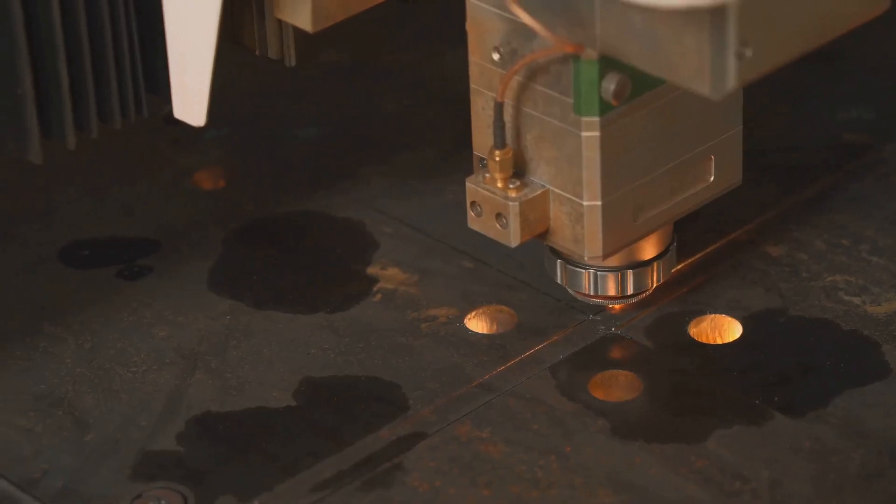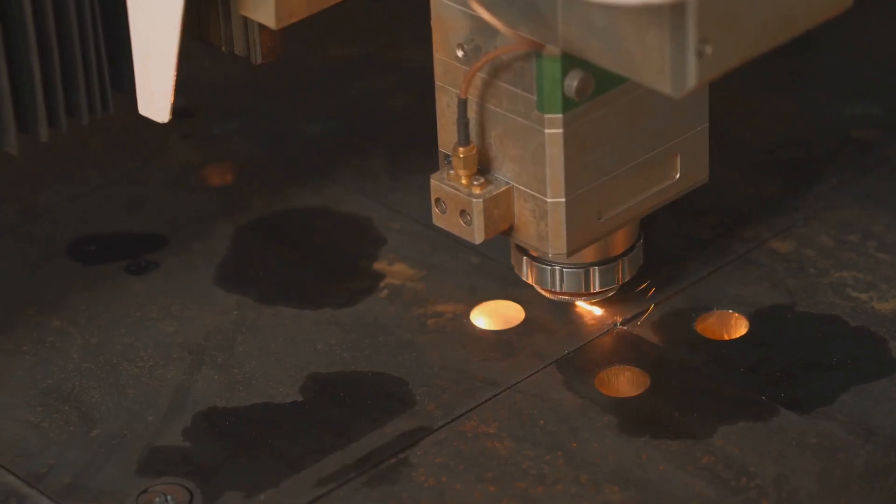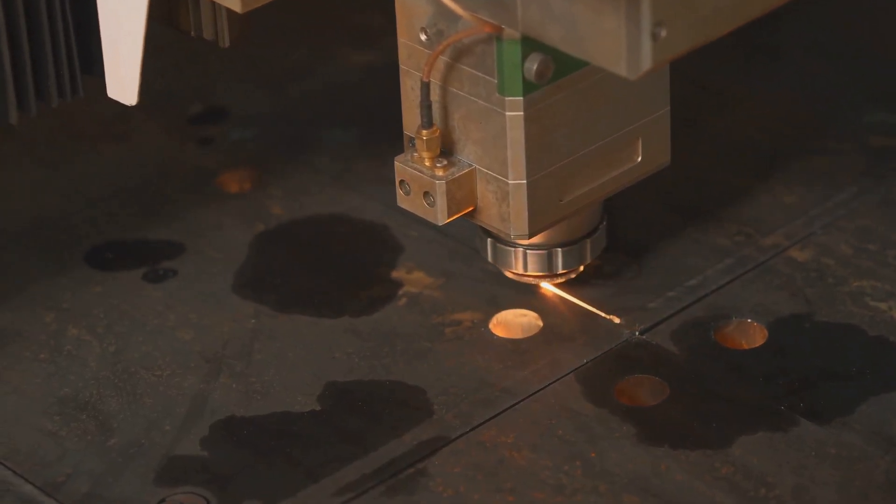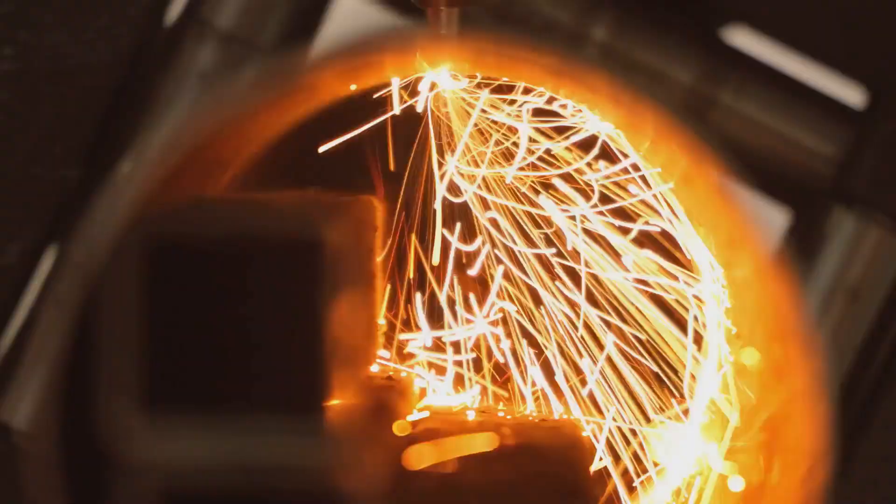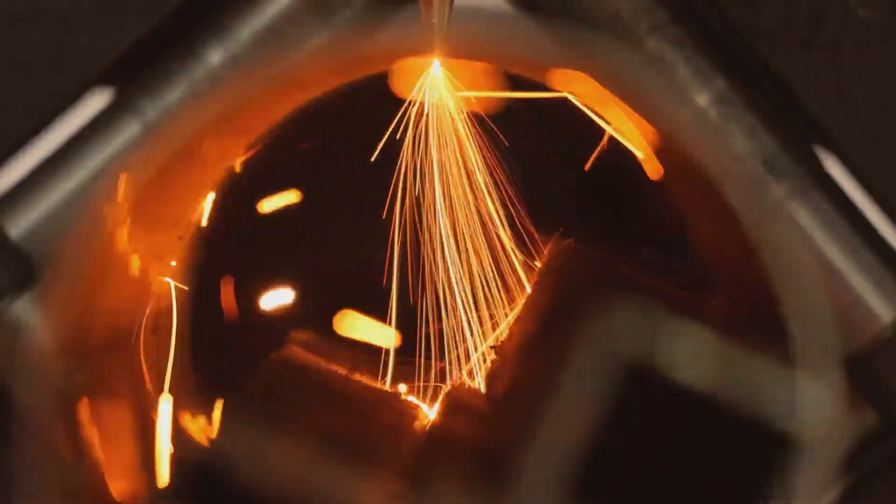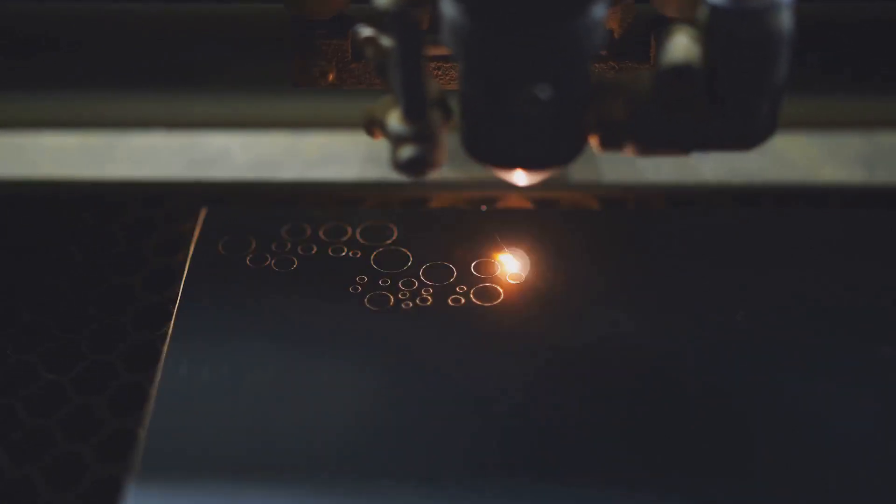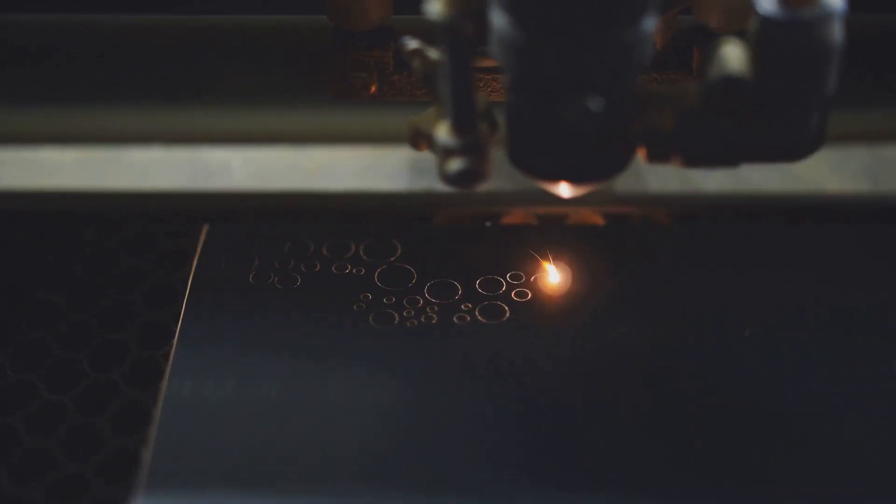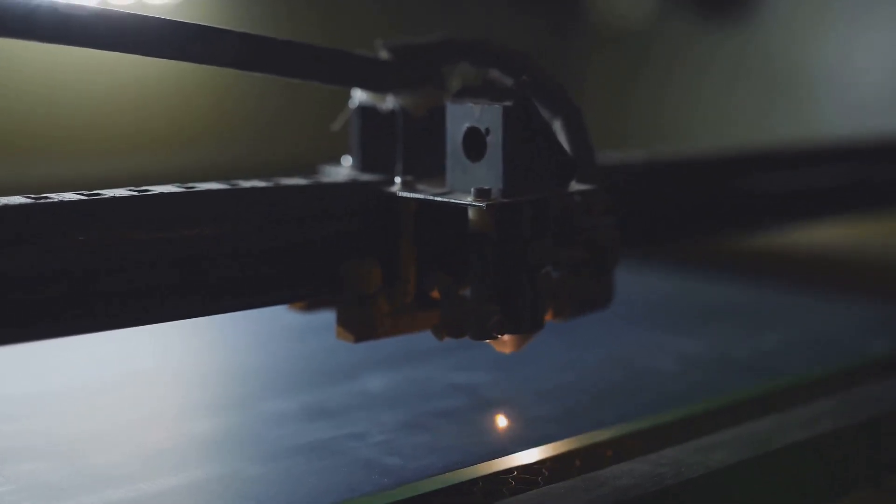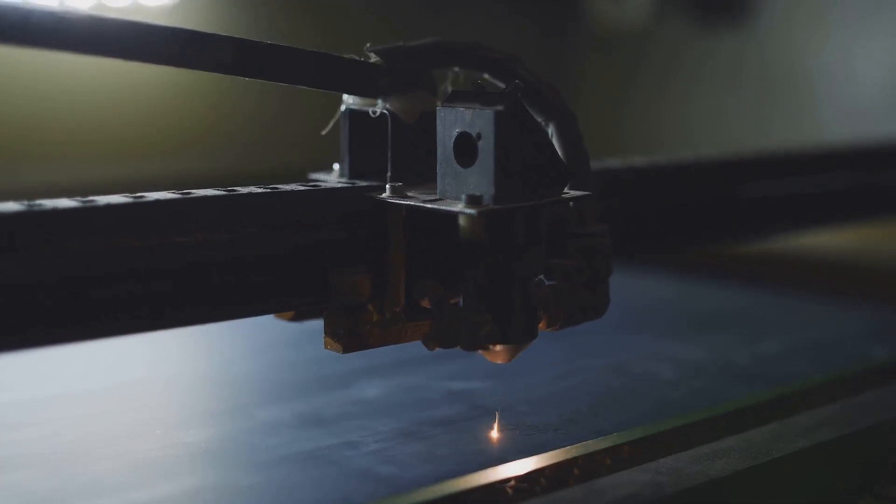The process begins with a droplet of molten tin, which is blasted by a powerful laser to generate a burst of extreme ultraviolet EUV light. This initial step is critical, as the quality and consistency of the EUV light directly impacts the precision of the microchip manufacturing process. This EUV light is then bounced off a series of perfectly smooth mirrors, each one polished to an accuracy of less than the width of an atom. These mirrors are essential for directing the light with pinpoint accuracy, ensuring that every detail of the circuit pattern is faithfully reproduced.